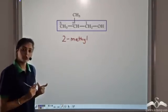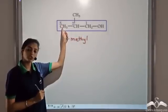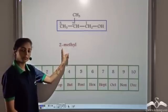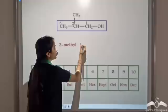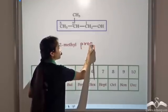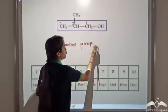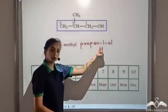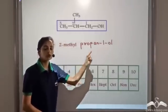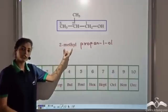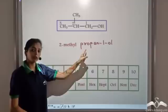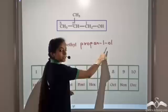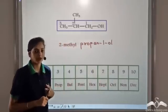Now we have to give the word root. The word root comes from the number of carbon atoms in the longest chain — we see 3 carbon atoms, which means 'prop'. So the prefix is 2-methyl, then we have the word root 'prop', and since we have an alcohol group at position 1, this becomes 2-methylpropan-1-ol. The -e of propane is removed and we give the suffix -ol. We first have the prefix for the substituent, then the word root from the number of carbon atoms, and then the suffix, which comes from the functional group present in the organic compound.